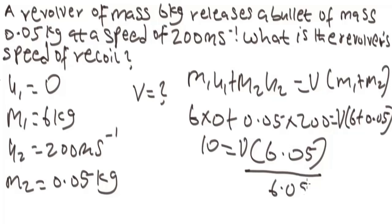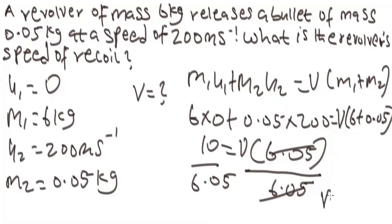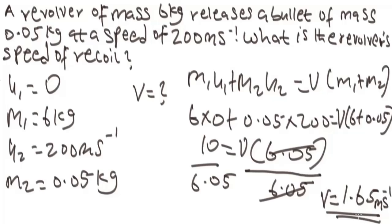To make V the subject, divide both sides by 6.05. So our final velocity V equals 10 divided by 6.05, which gives us 1.65 meters per second, leaving it to two decimal places. So this will be the speed of recoil — the final velocity.